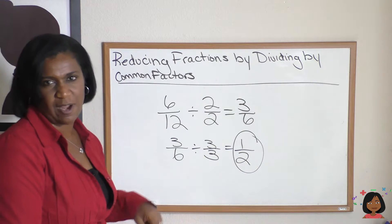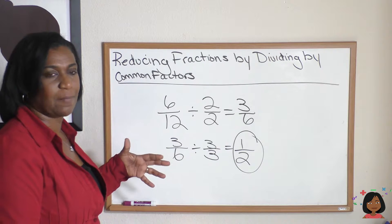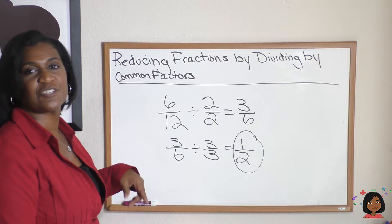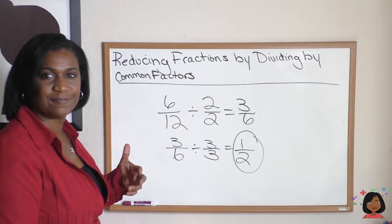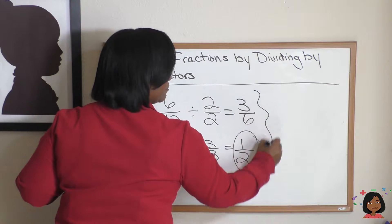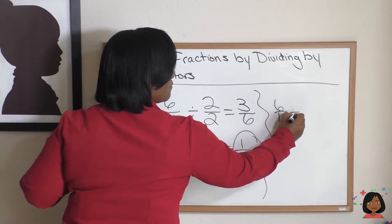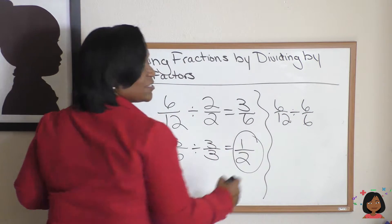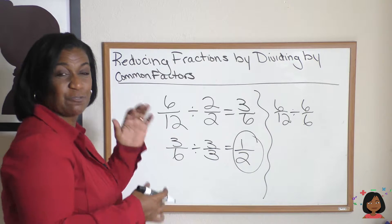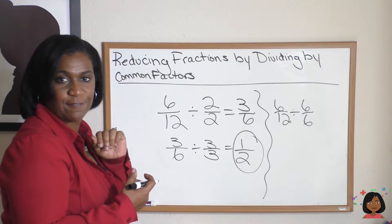What if we chose a different number as a common factor? What if we chose a bigger number? What number goes into both 6 and 12? 6. So I'm going to write it over here. If we did it by 6, divide the top by 6, divide the bottom by 6. So we picked really the greatest common factor that they have together.